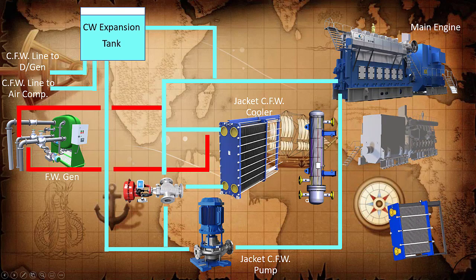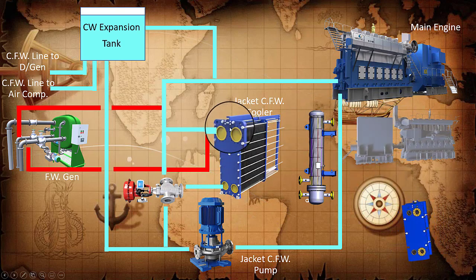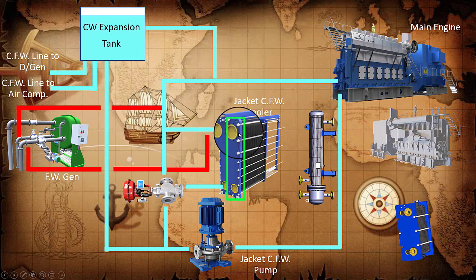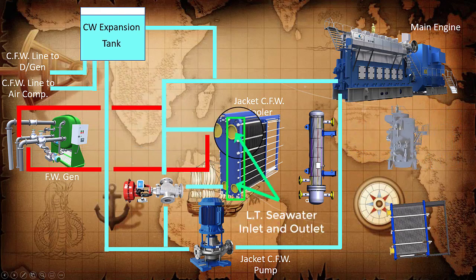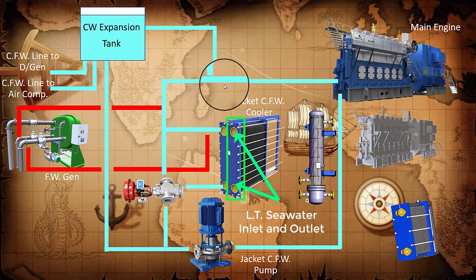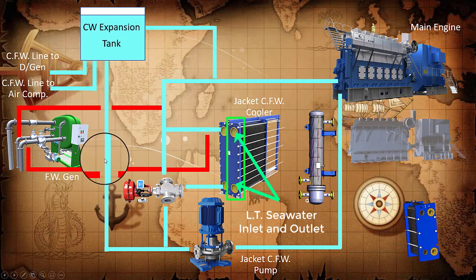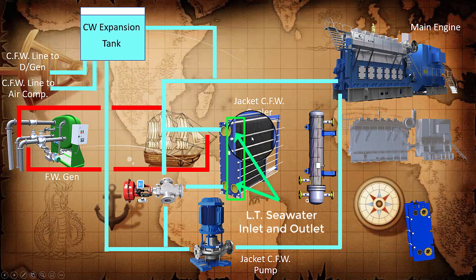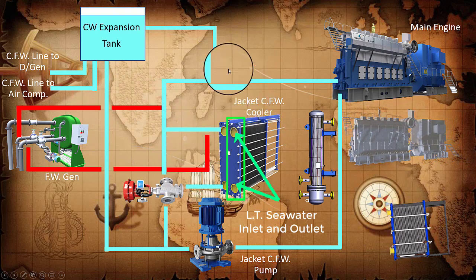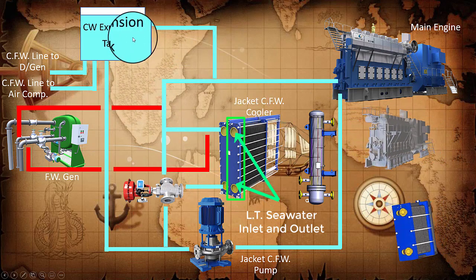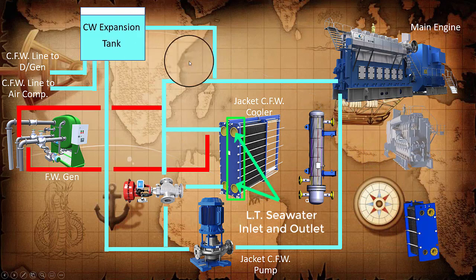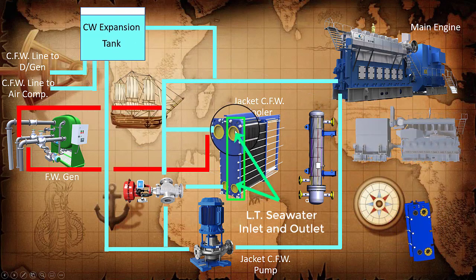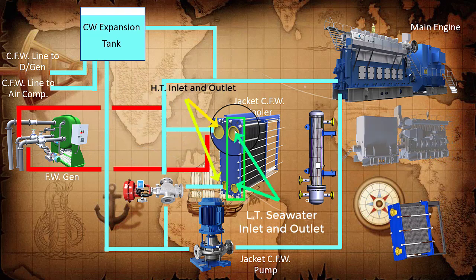Seawater is used as a cooling media in large seawater heat exchangers to cool the fresh water system, or the closed circuit. These are the standard coolers of the system. Normally they are installed in parallel with the fresh water system. The low temperature circuit is used for low temperature zone machinery, and this circuit is connected to the main seawater cooler.